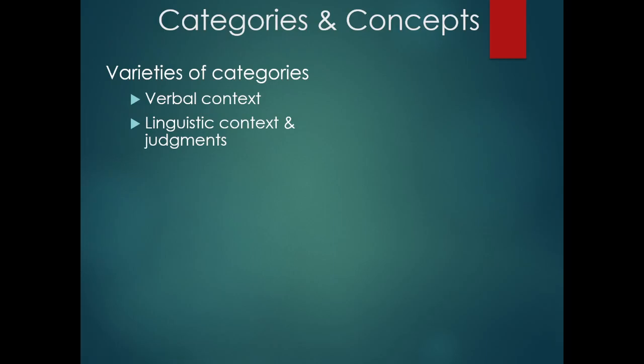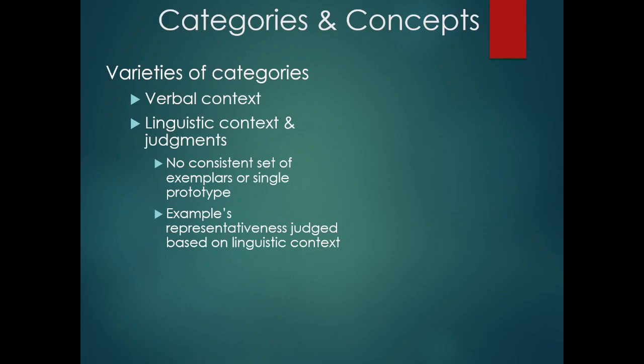Now, linguistic context and judgment, you might be like, wait, how is verbal different from linguistic? Linguistic context and judgments where we're asking them to make decisions about stimuli. We don't see a consistent set of exemplars or a single prototype emerge. The examples representativeness will be judged based on the linguistic context usually. So let me give you some examples, like semantic categories. So if we ask you whether a chair is representative of the concept of furniture versus whether we, whether you think a rocking chair is representative of the concept of furniture, like these are semantic categories, furniture, chair, rocking chair.